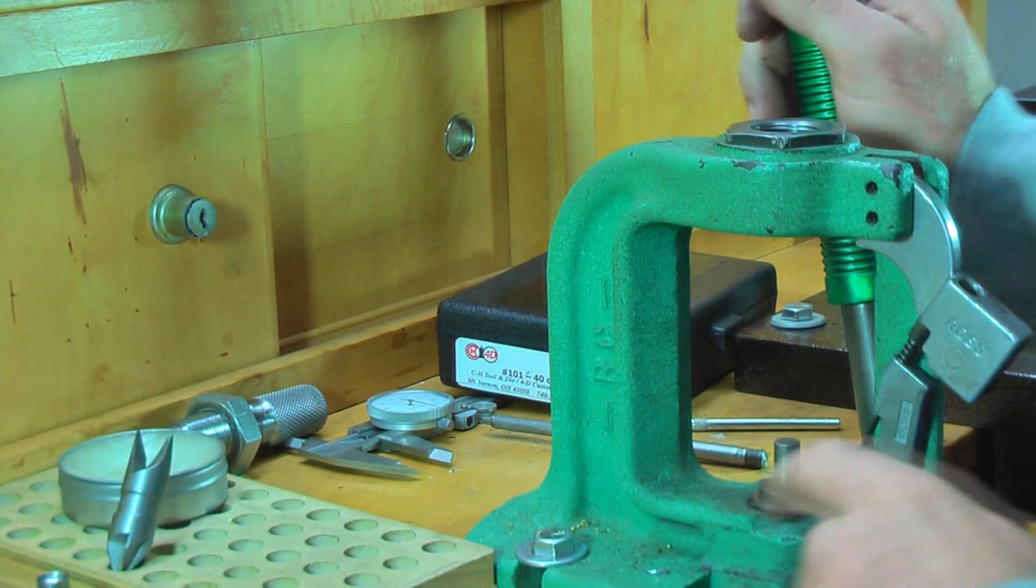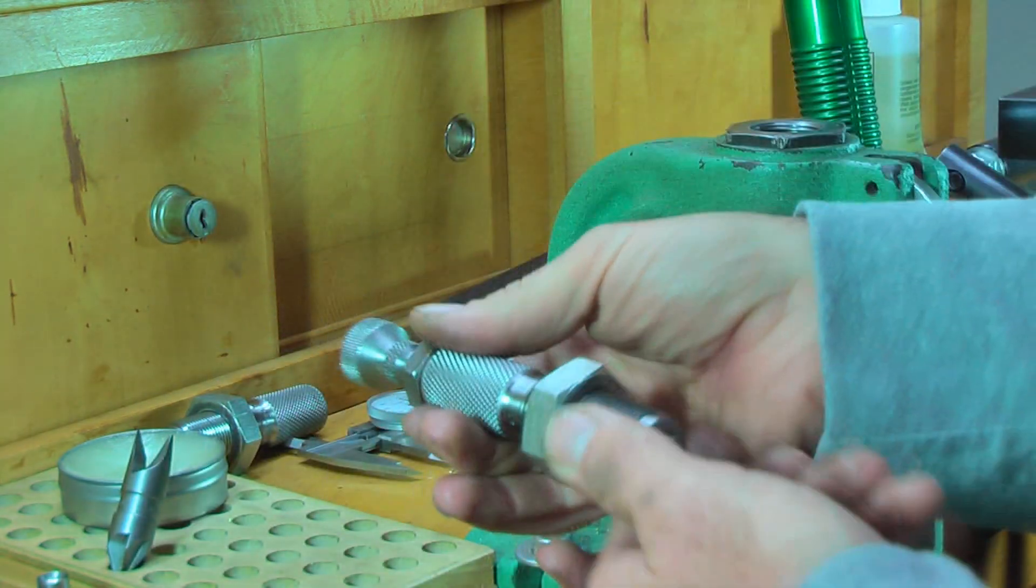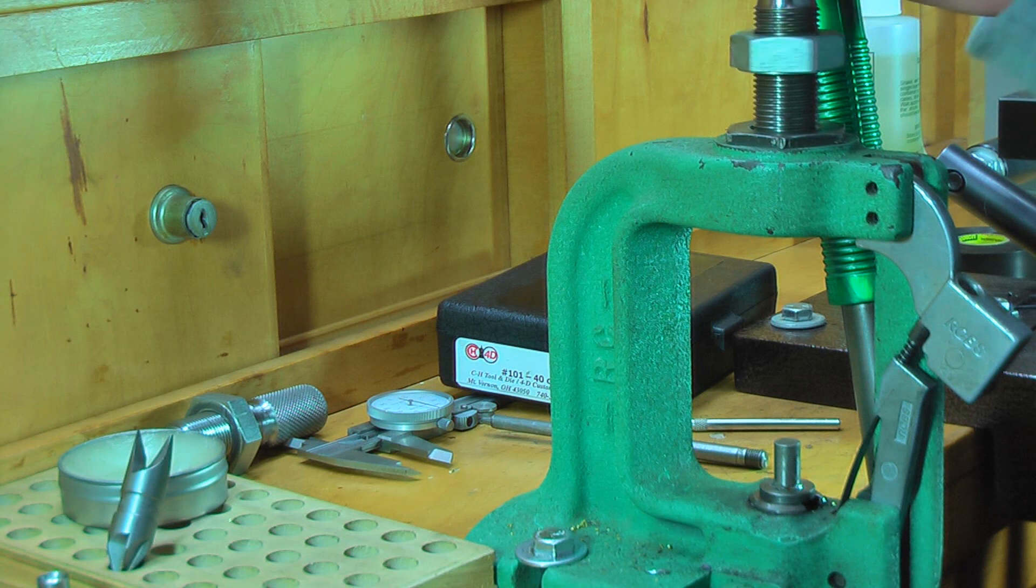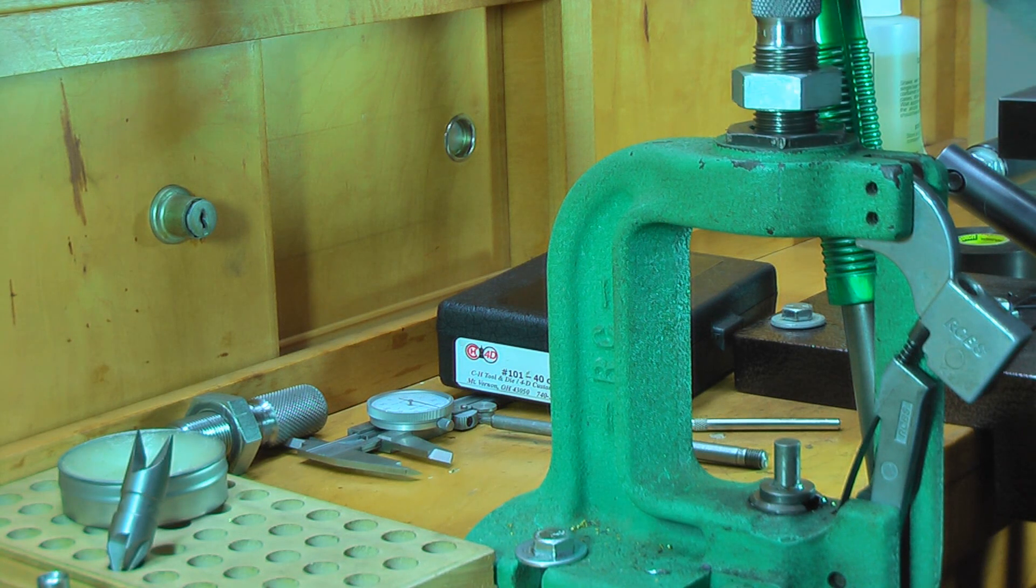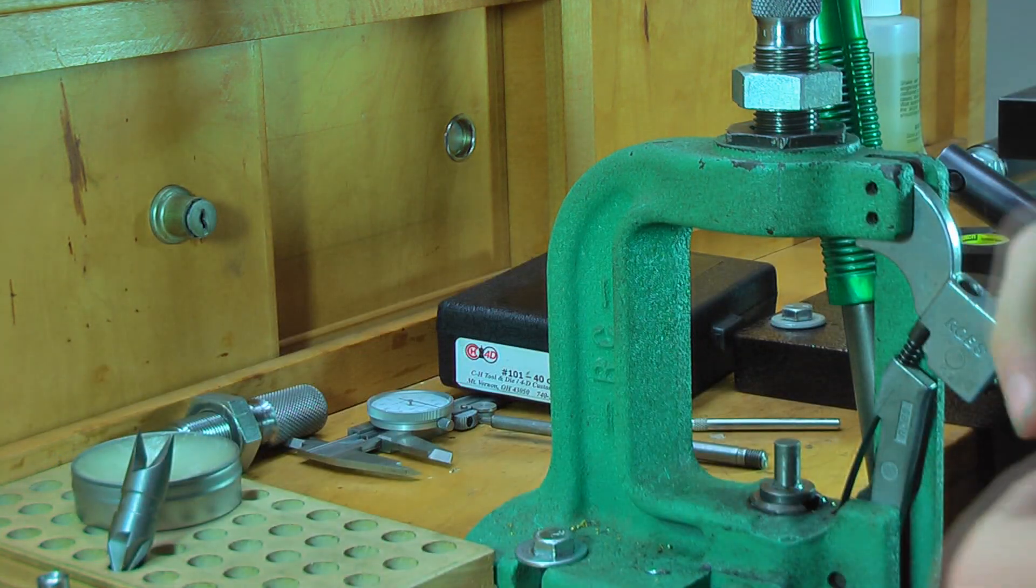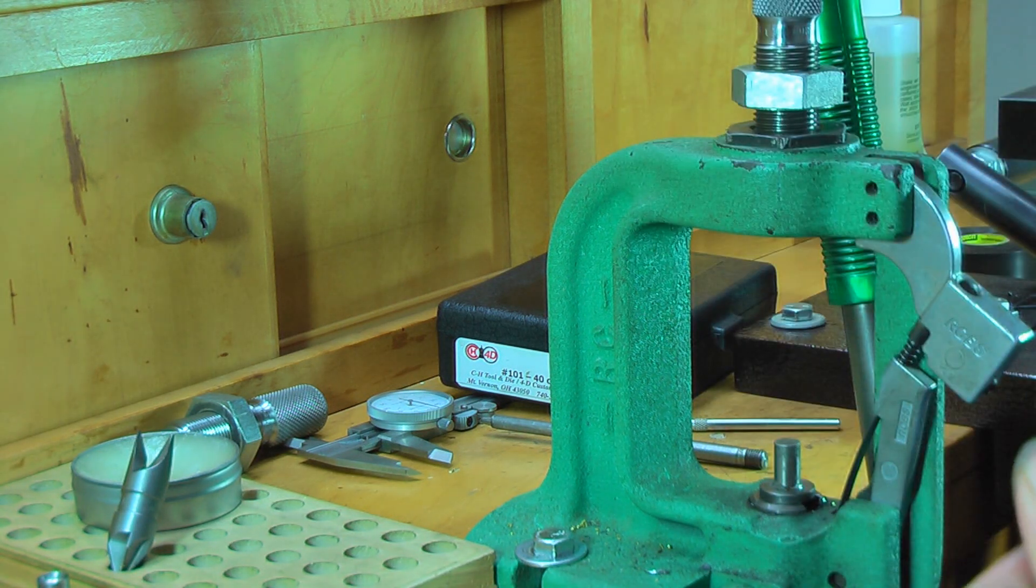Okay. We've got the 9mm swage punch in here. Now we're going to put the .40 caliber core seat die, core swage die, whatever you want to call it, inside the press. This is where you're going to need your rubber mallet. You can use a wooden handle. I like using a rubber mallet because it doesn't make as much racket.